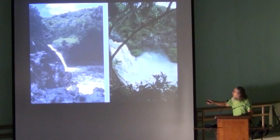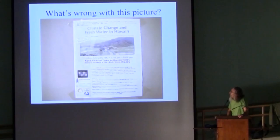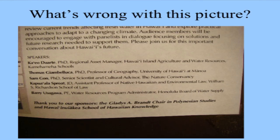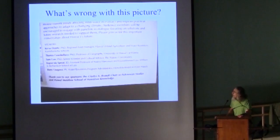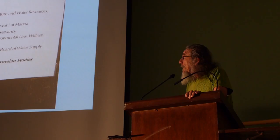Waterfalls going into the ocean can be really high flow or moderate flow. There was a poster up on campus about climate change and fresh water in Hawaii, and when I asked students what was wrong with it, most said they didn't like the colors. But what's actually missing is there's nothing on there about native biota in the streams — it's all about water for human use.